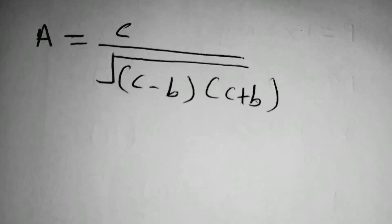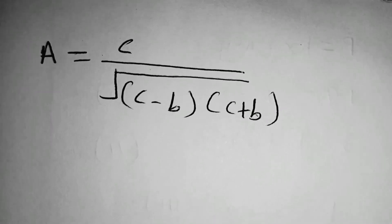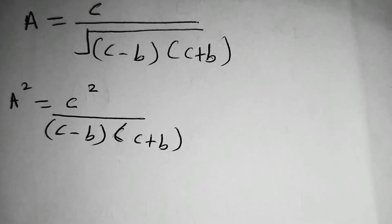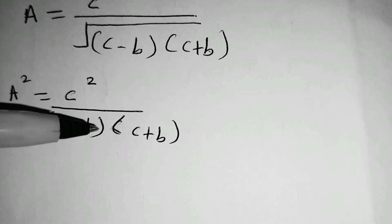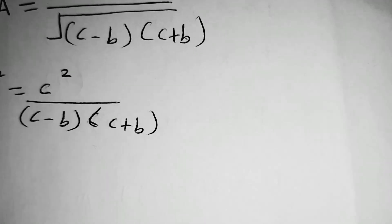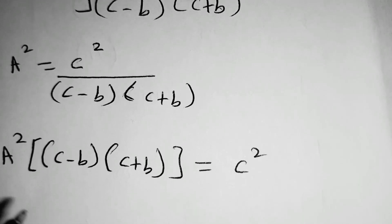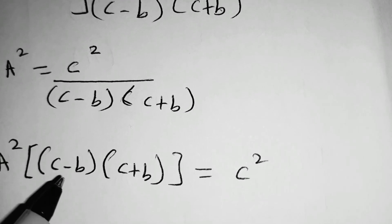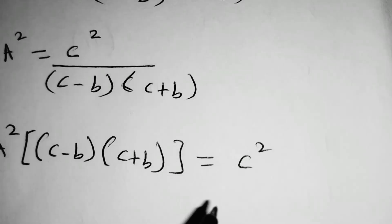The first step is to square all these quantities on both sides. When we square, we will have A squared equals C squared divided by bracket C minus B, bracket C plus B. When you take the square root and you square, you obtain the value which is there. Then we multiply both sides by the denominator, so we have A squared multiplied by bracket C minus B, bracket C plus B, which is equal to C squared.